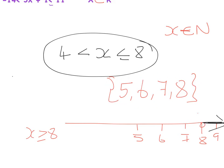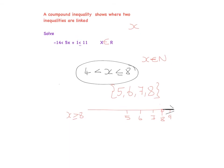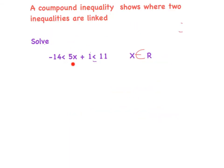Back to the question: -14 < 5x + 1 ≤ 11. My aim is to get x alone in the middle. I'll start balancing by getting rid of the plus one — I place minus one over all three sections. The plus one and minus one cancel, leaving minus 14 minus 1, which gives minus 15 < 5x ≤ 11 minus 1, which is 10.